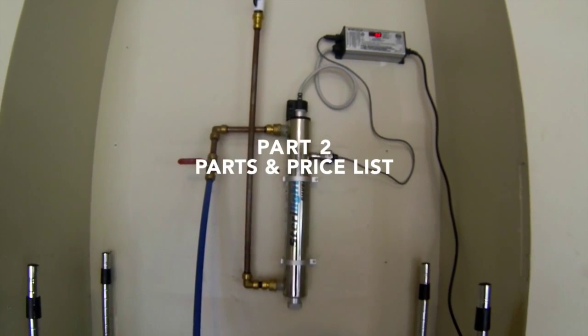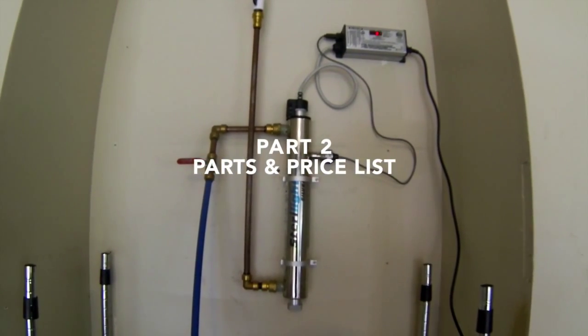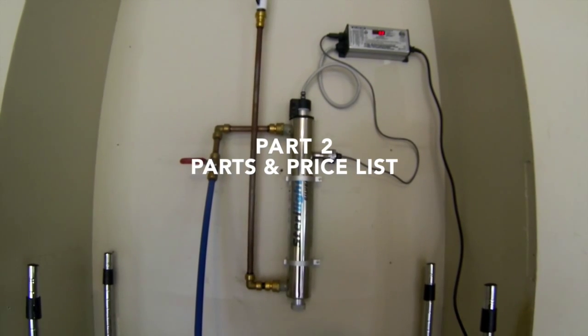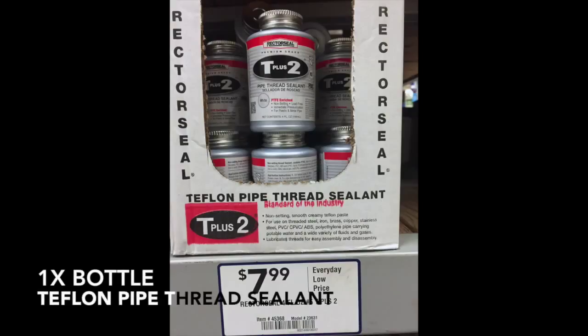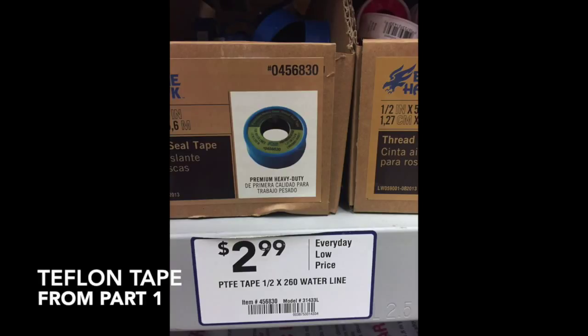Hello everyone and welcome to part 2 of the parts and price list for the water purification board. Starting off, you will need one bottle of Teflon pipe thread sealant. You will need the same Teflon tape you used from part 1.